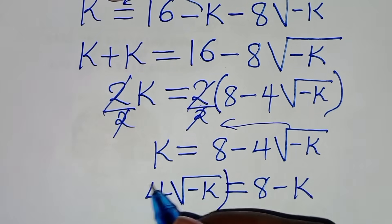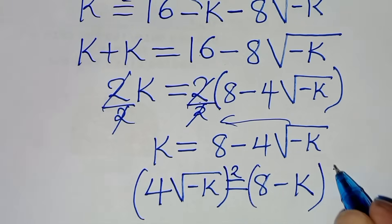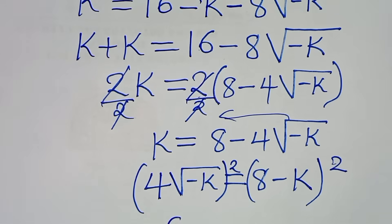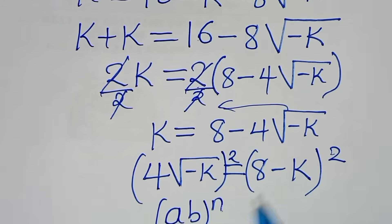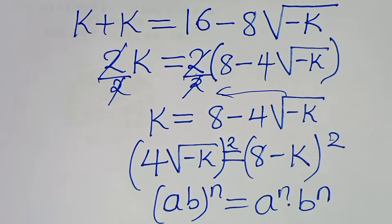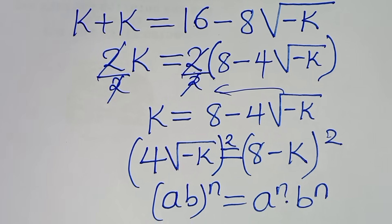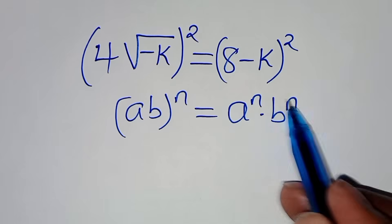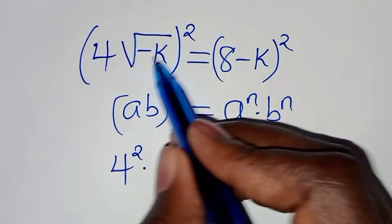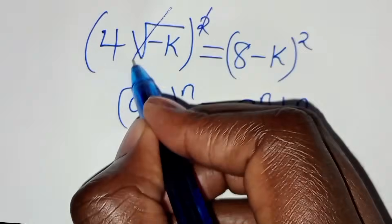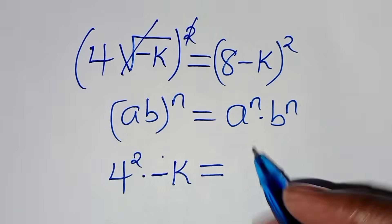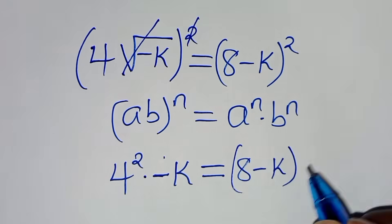So let's take minus 4 square root of minus k on the left hand side, so that now we have 4 square root of minus k, this is equal to 8 minus k. From here let's again square both sides. We find that 4 times square root of minus k raised to the power of 2 is in the form of a times b raised to the power of n, which we can express as a to the power of n times b to the power of n. Applying this exponent property, we have 4 squared times square root of minus k raised to the power of 2.